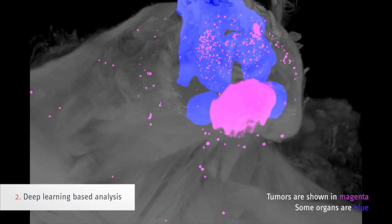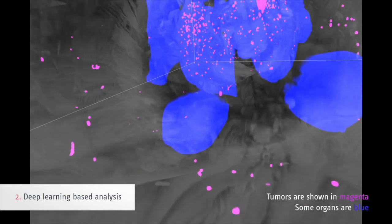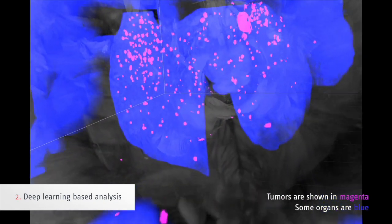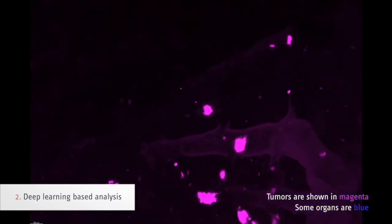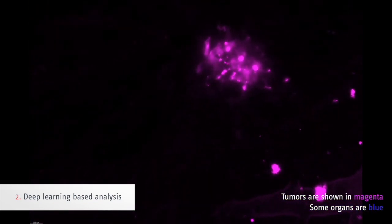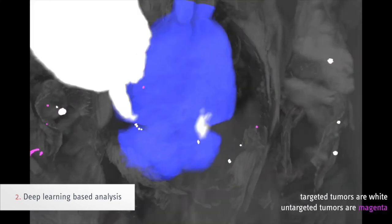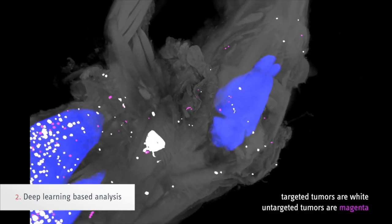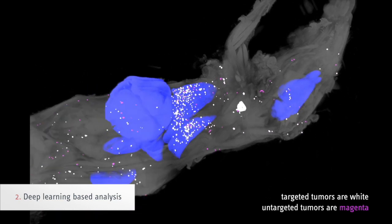Using this new technology, we successfully revealed hundreds of small metastases throughout the mouse body, which were not detectable by other methods. DeepMAC also enabled us to see exactly which cancer metastases were targeted by a drug candidate and which ones were missed.